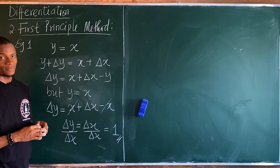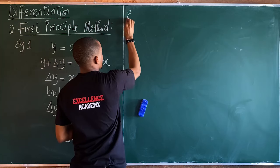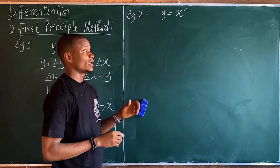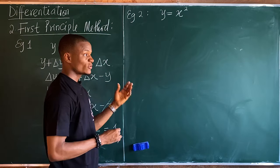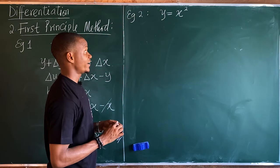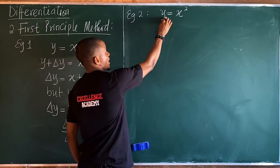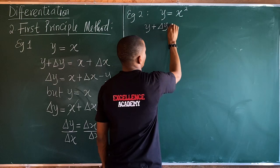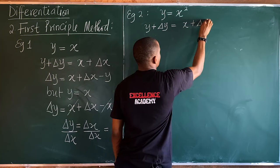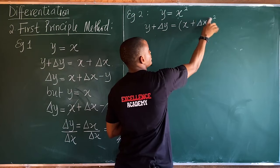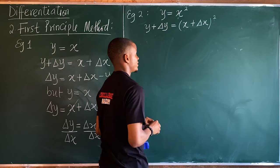Let's take example two under first principle: y equals x². Using the general method, dy/dx equals 2x. But let's solve it using first principle. We add Δy to y and Δx to x, so y plus Δy equals x plus Δx, but since x is squared here, we square the right side: y plus Δy equals (x + Δx)².